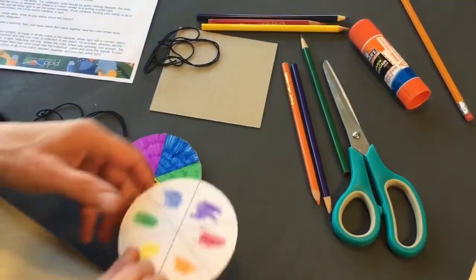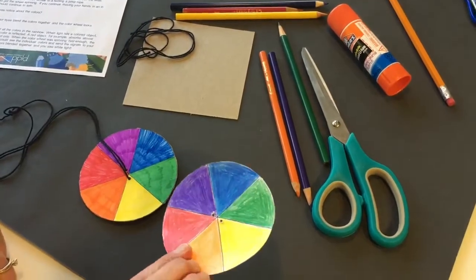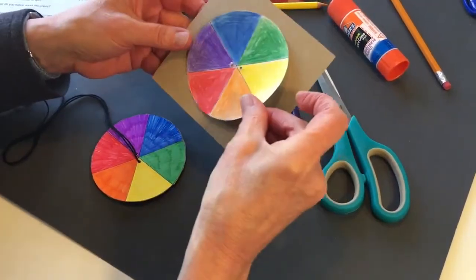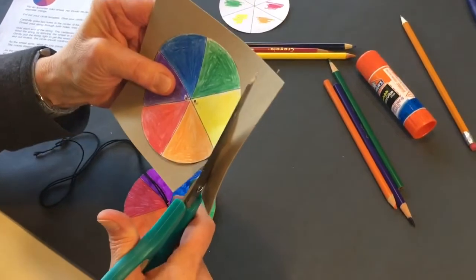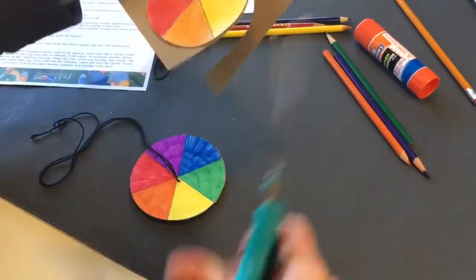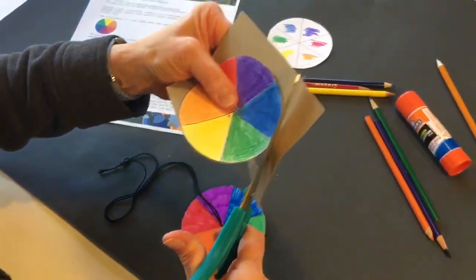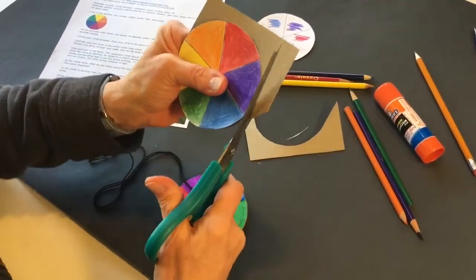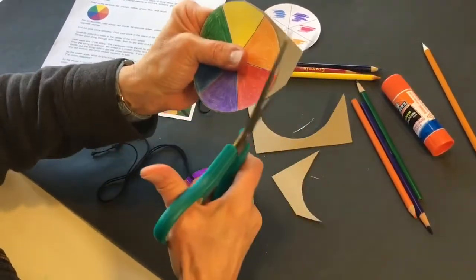So not to take time to continue coloring, I have one made here already and I'm going to put it on the cardboard and cut out a circle around my color wheel template. Some of your cardboard may be a little thicker, just have a grown-up help you with this part.